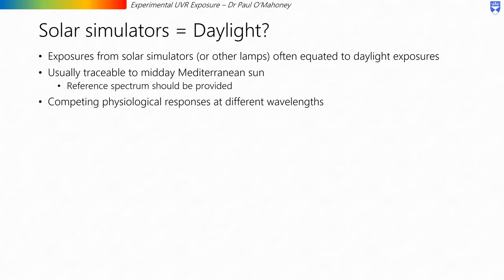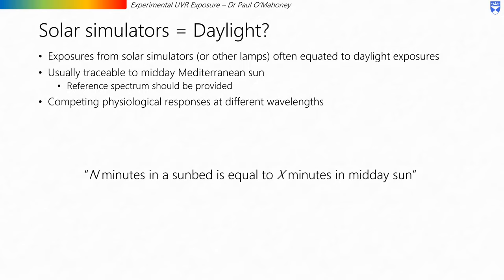Exposures from solar simulators, and sometimes other lamps, are often equated to daylight exposures, usually traceable to a midday Mediterranean sun, though a reference spectrum should always be provided if making this type of comparison. What is often missed, or at least not highlighted, is that there may be competing physiological responses at different wavelengths. You might often hear the phrase 'N minutes in a sunbed is equal to X minutes in the midday sun.' If you're going to carry out this type of comparison, it is absolutely crucial that you provide as much context as possible, such as the spectral irradiance of the light source and the daylight it is being compared to.